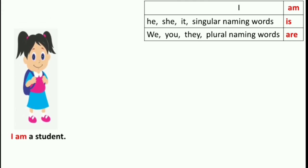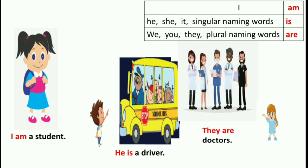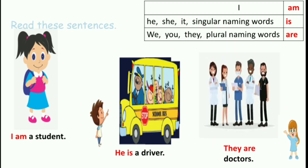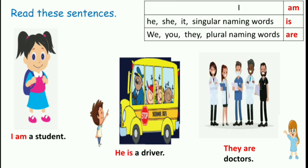Now children, look at these 3 pictures and let us read these 3 sentences. First: I am a student. Second: He is a driver. Third: They are doctors. In the first picture you are talking about yourself — I — so am follows I. He is singular, so is follows he. And for plural — doctors — we use are, so we read: They are doctors.